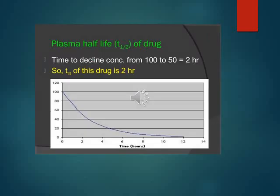And here is the graph to explain Plasma Half-Life more clearly. You can see along X-axis there is time like 2 hour, 4 hour, 6 hour. And along Y-axis there are doses like 20, 40, 60, 200. Initially the plasma concentration of drug is 100.